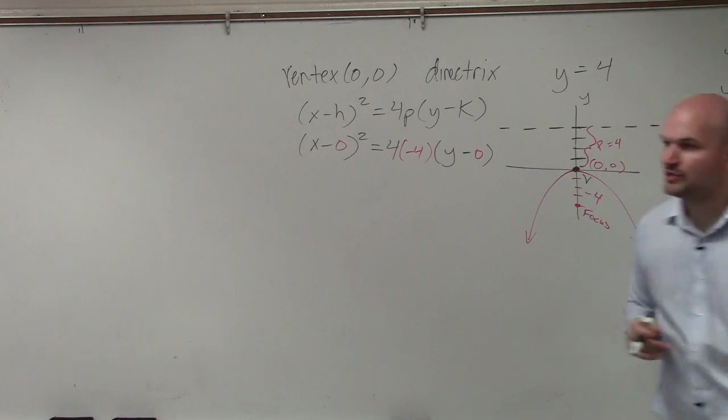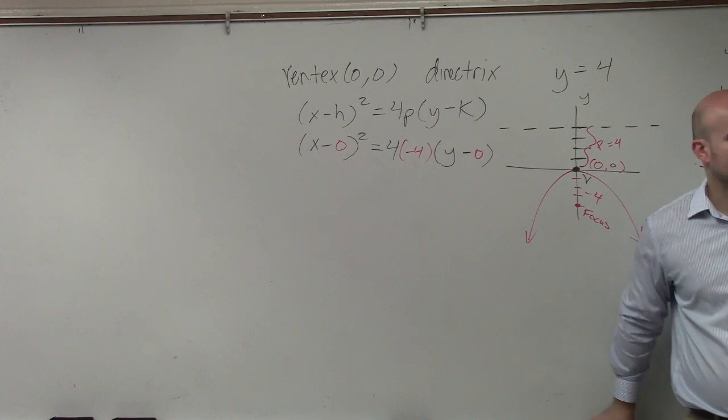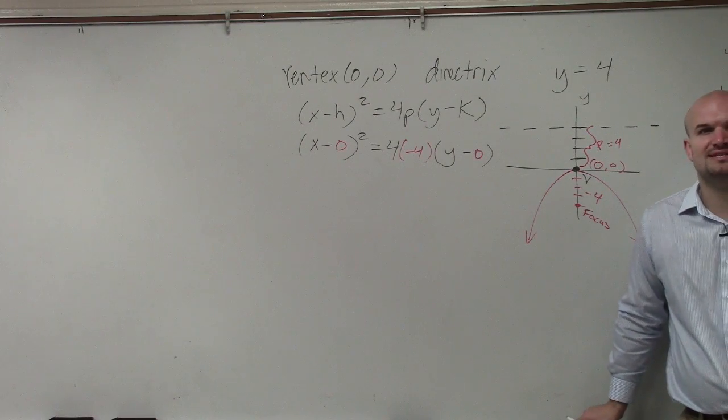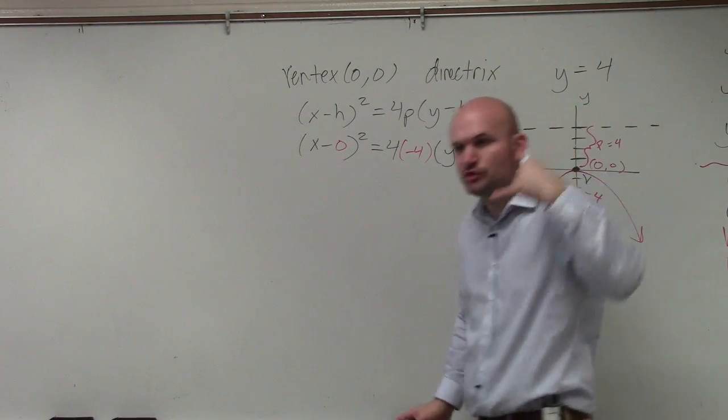So does everybody see what I inputted in? I inputted 0 for h and k. And then I inputted negative 4 in for my value p. Because value p is the distance from your vertex to your focus.